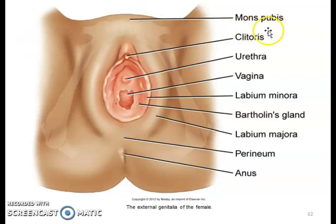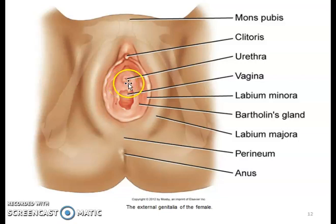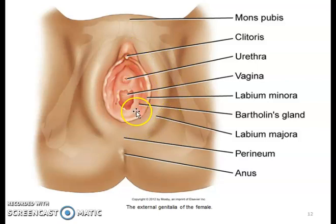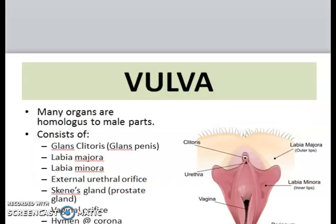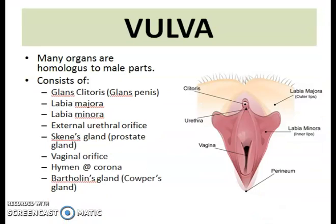Regarding the external female reproductive system, we should be able to locate the mons pubis, clitoris, external urethral orifice, vaginal orifice, labia majora, labia minora, the perineum area, and the anal region.